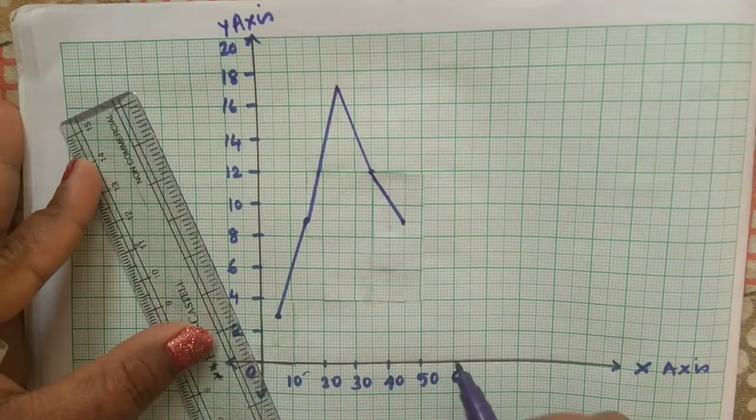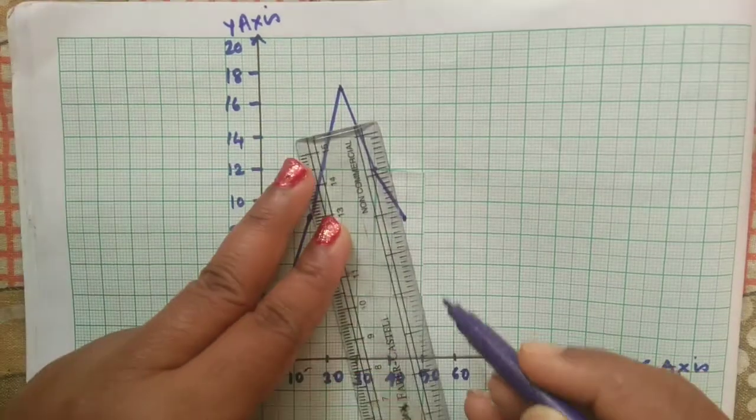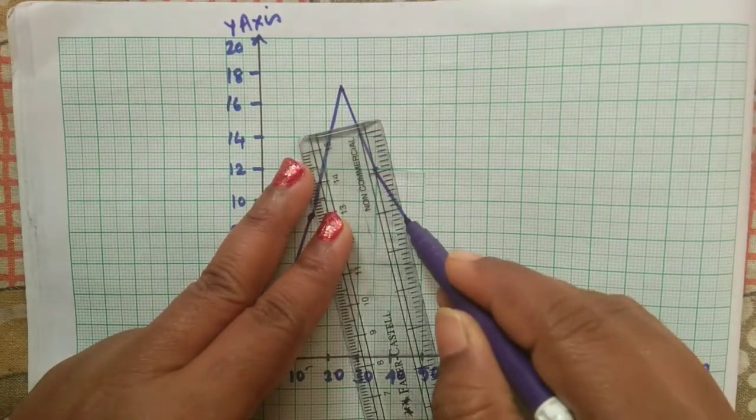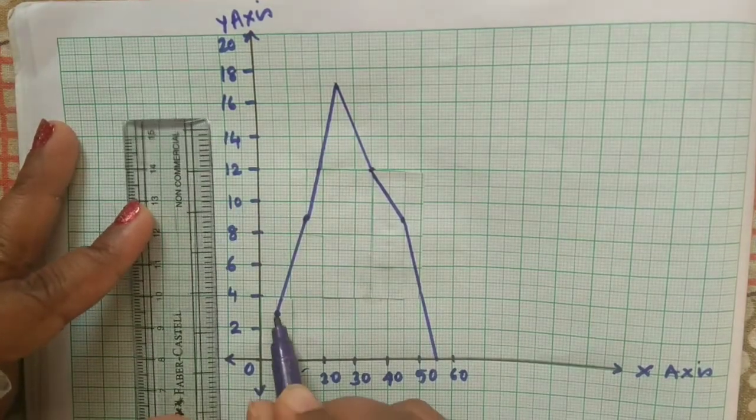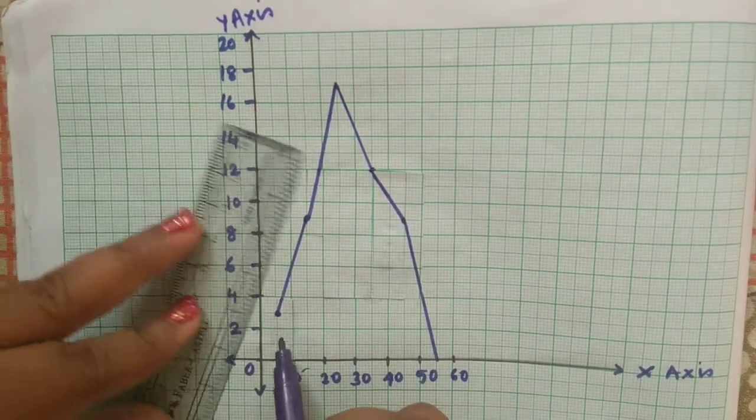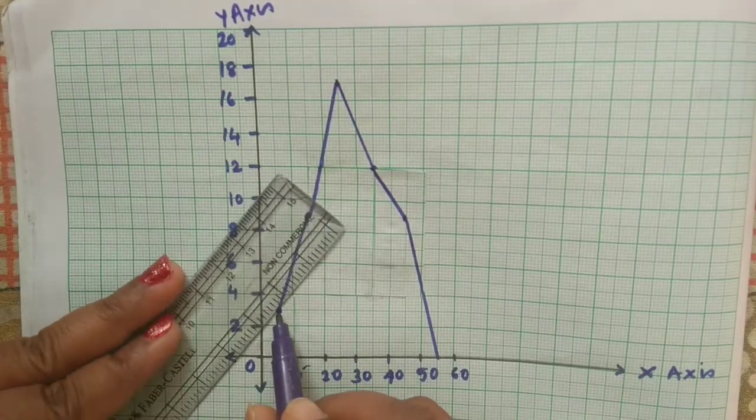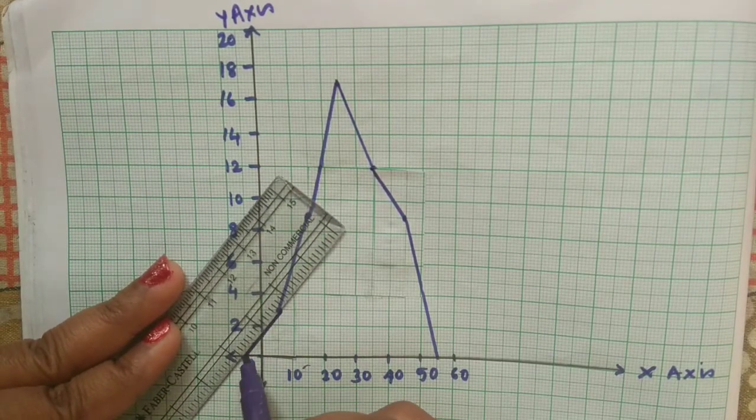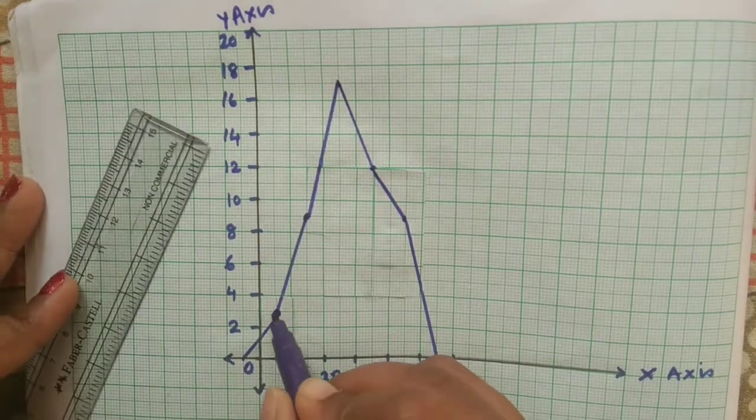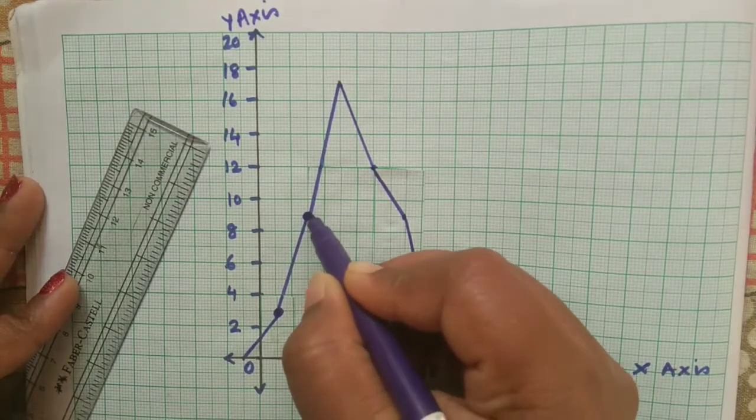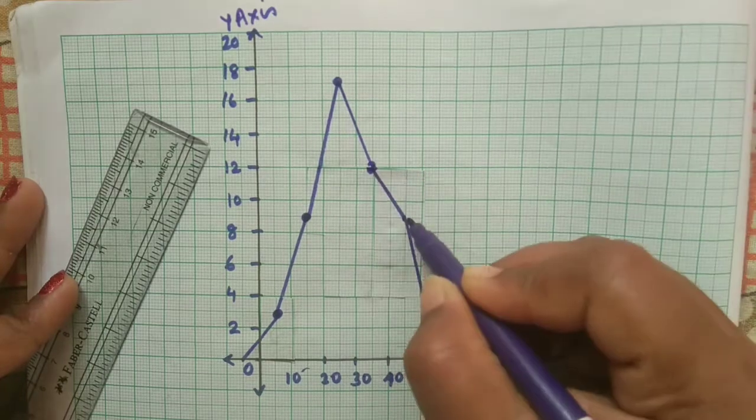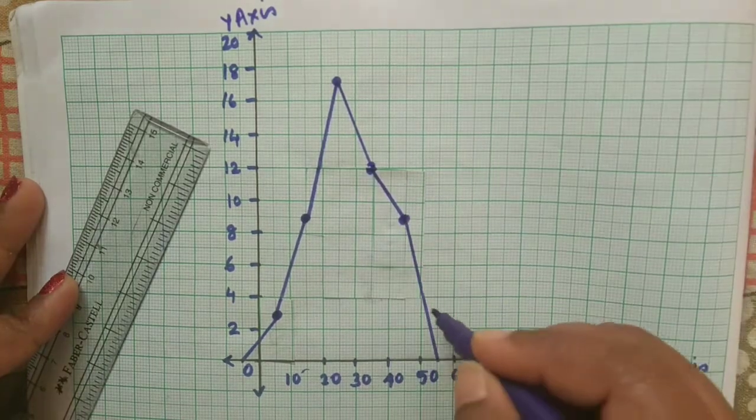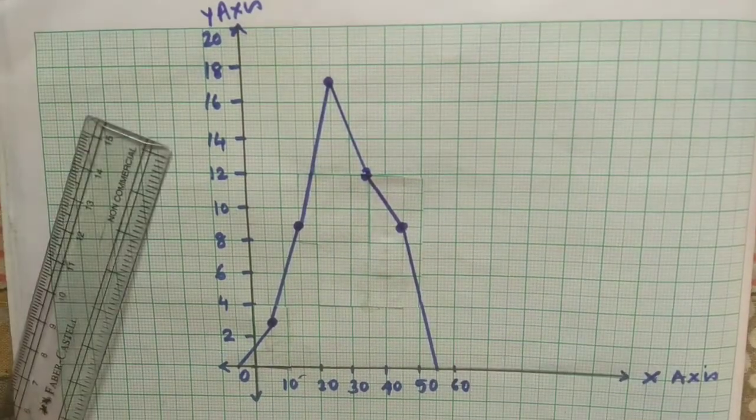And now you can see this polygon is not closed. You need to see that the polygon should touch on the axis. You have to extend it to the next class mark. Both the before and after you have to extend the line in such a way that they have to touch the x axis. Only then the frequency polygon is formed.